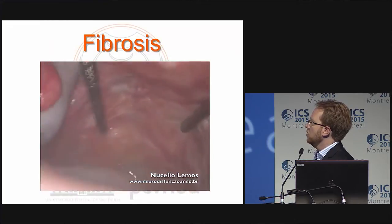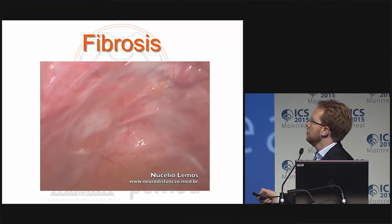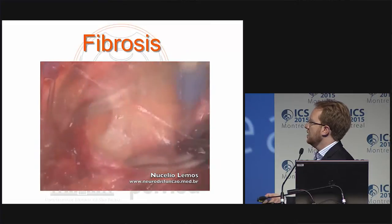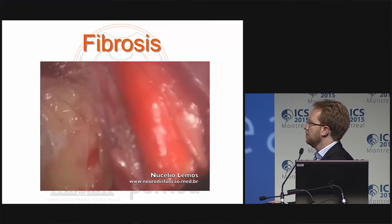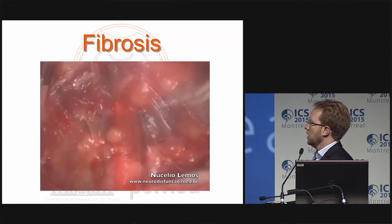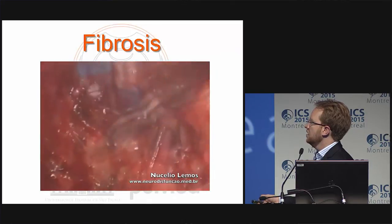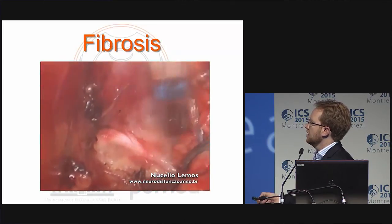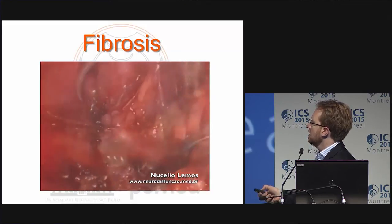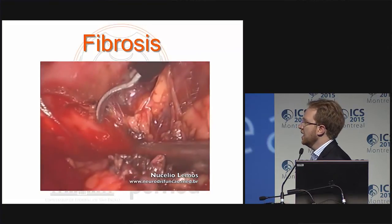We can also have fibrosis — secondary to endometriosis in this case. There was a radical resection here; you can still see the peritoneal scar. The patient had sciatica, perineal pain, and urinary urgency. Going to the nerve, we can already see the fibrotic tissue, and instead of the healthy fatty tissue seen in other dissections, there is fibrotic tissue that limits the movements of the sciatic nerve.